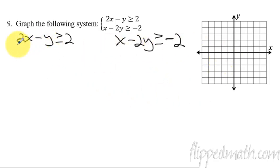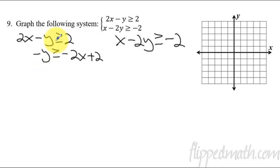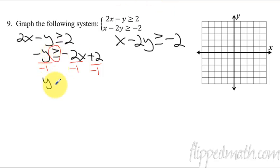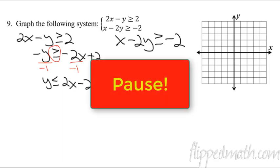We're going to do one more problem and end with this one. When you have ones like 2x minus y is greater than or equal to 2, we're going to rewrite both inequalities and solve for y. I'll do the first one with you: subtract 2x from both sides, giving negative y is greater than or equal to negative 2x plus 2. Divide everything by negative 1 — and you have to flip the inequality — so y is less than or equal to 2x minus 2. Do the same thing with the second inequality, then graph both. Pause now, and when you're done, continue the video.